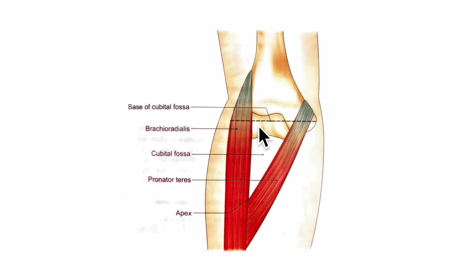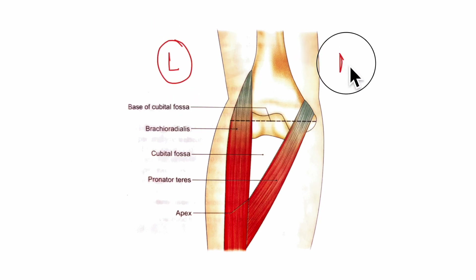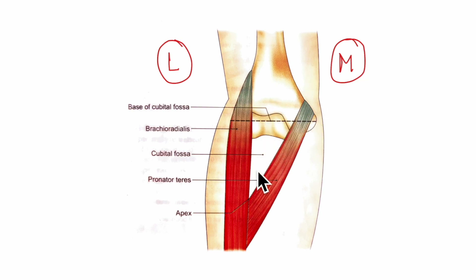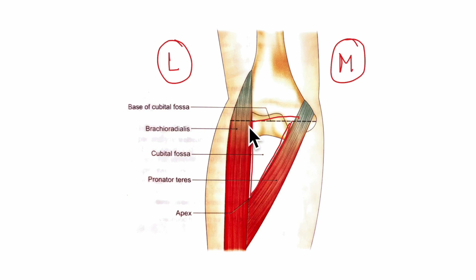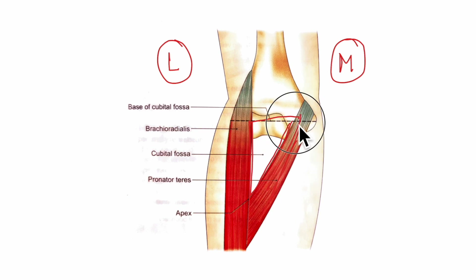Now let us learn about the boundaries of the cubital fossa. In this diagram you can see the right cubital fossa — this is the lateral aspect and this is the medial aspect. Lateral means away from the midline of the body and medial means towards the midline. The cubital fossa is bounded laterally by the medial border of the brachioradialis muscle, and medially by the lateral border of the pronator teres muscle.